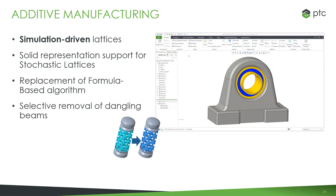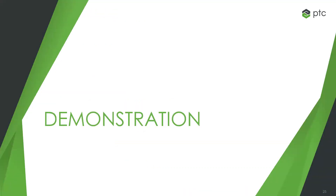Lastly, we're now able to selectively remove dangling beams that may have been created from a lattice. If you create a lattice and at the end of one of those beams it's exposed to open air and not attached to anything, you can now go through and selectively remove those if necessary.